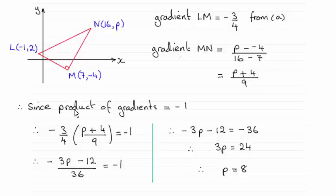Okay so this is the key point really in this question, knowing that the product of perpendicular gradients equals minus 1.